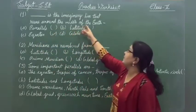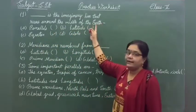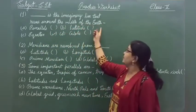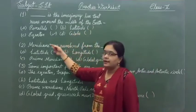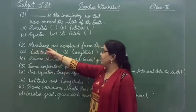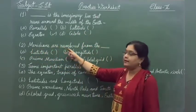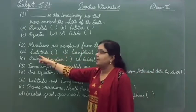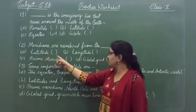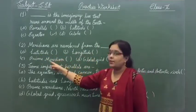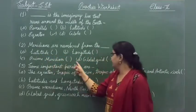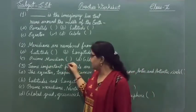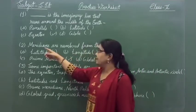Equator is the imaginary line that runs around the middle of the earth. Question 2: meridians are numbered from — the options are latitude, longitude, prime meridian, and global grid. The correct option is prime meridian.